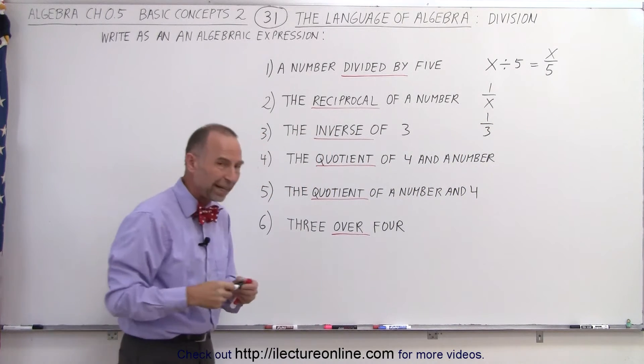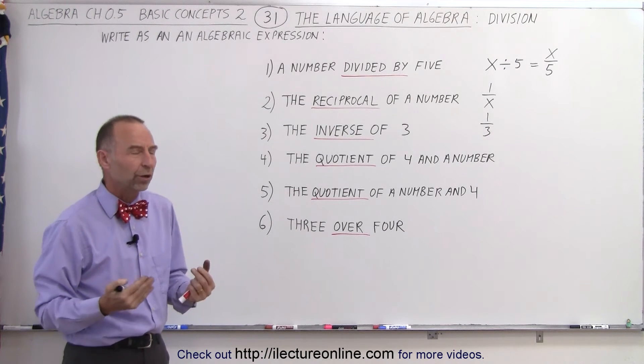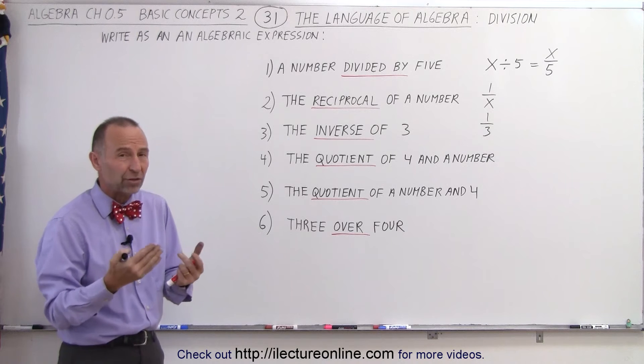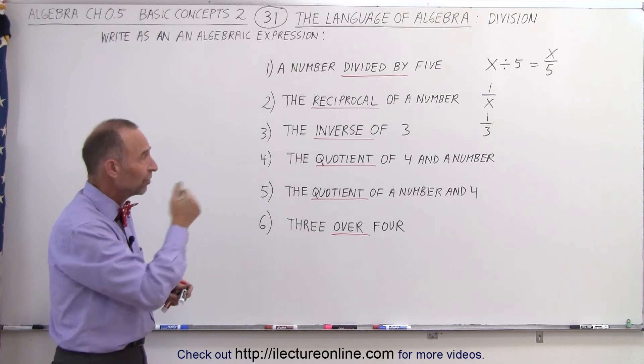The quotient of 4 and a number, and then we see the quotient of a number and 4. Which is which? Well, just like with subtraction or the difference, we write it in the order that we see it.